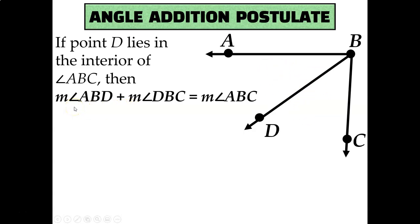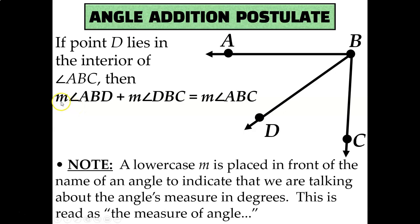Also, a quick note about notation. You'll notice that some of these angles have an M in front of them, and some don't. The reason for that is if you are referring to an angle's measurement in degrees, then you're supposed to put a lowercase m in front of the angle symbol, and you would read that as the measure of angle ABD, or the measure of angle DBC, or the measure of angle ABC. But if you are just talking about the shape of an angle in general, like how the beginning of this postulate stated that point D was inside of this shape, angle ABC, then you just say ABC with no M.